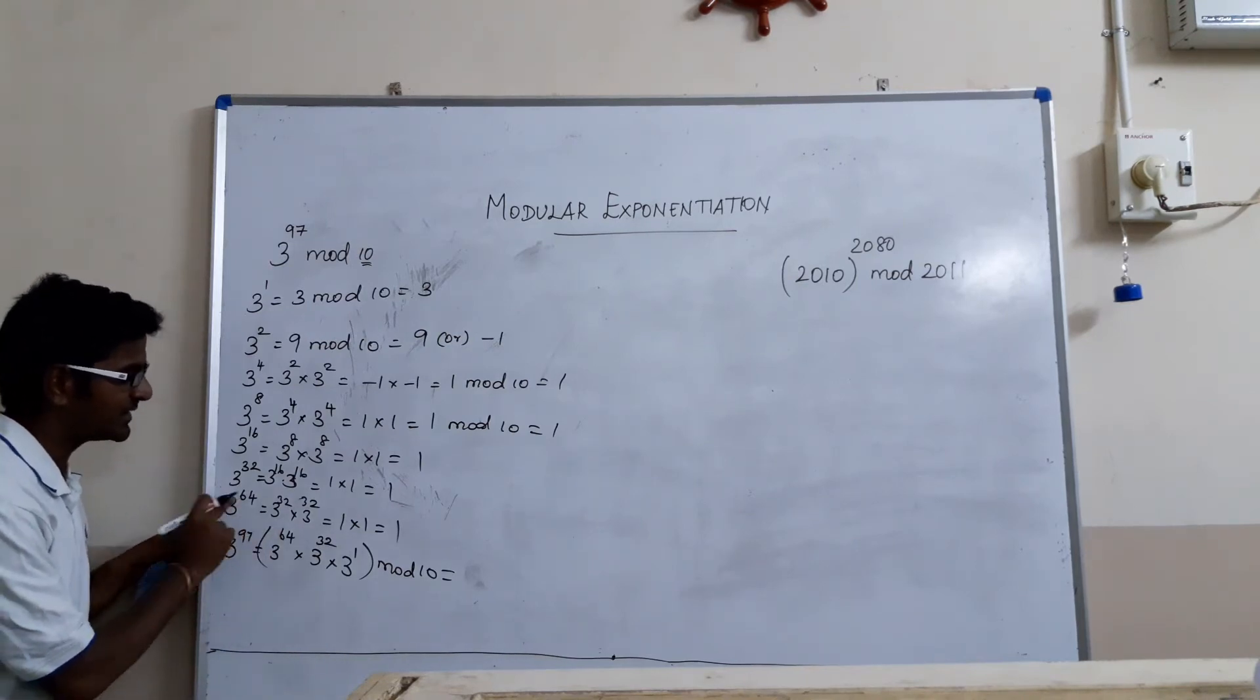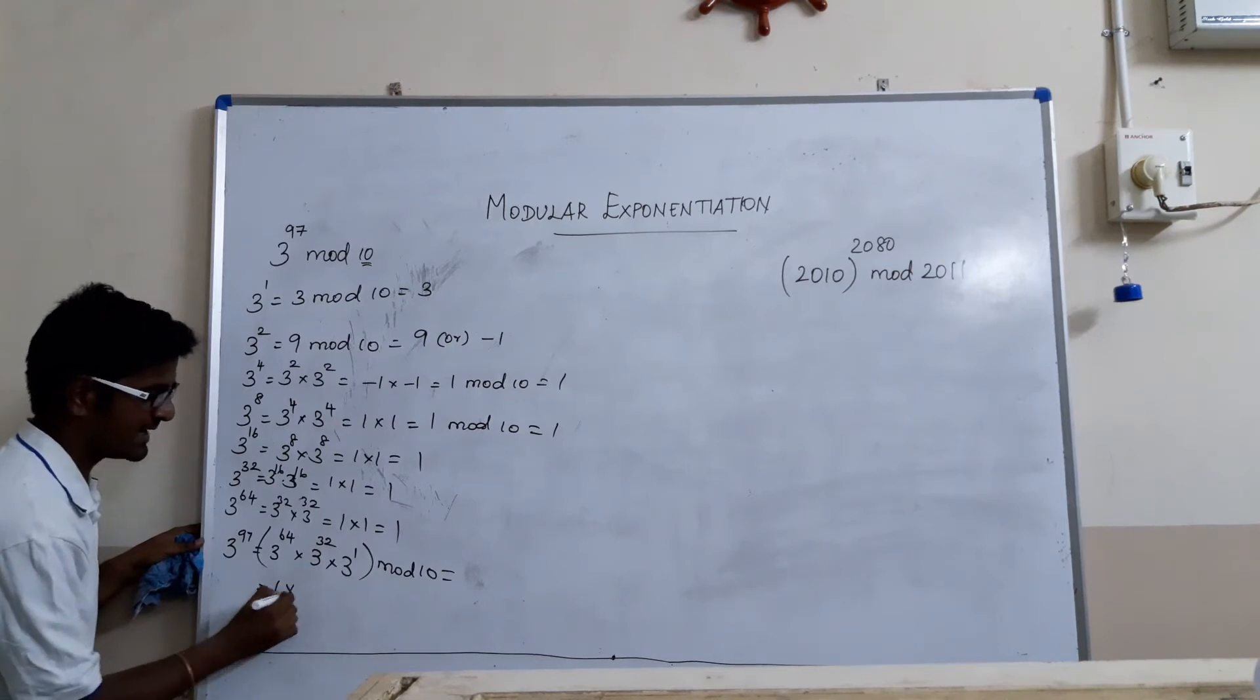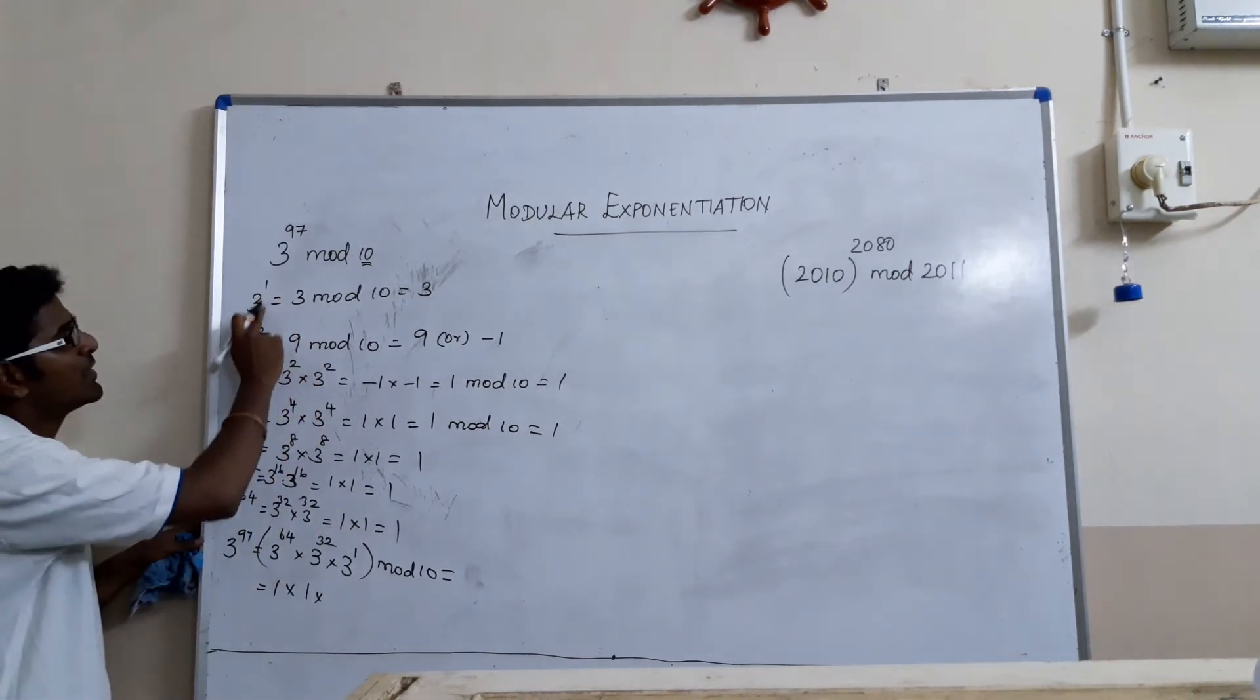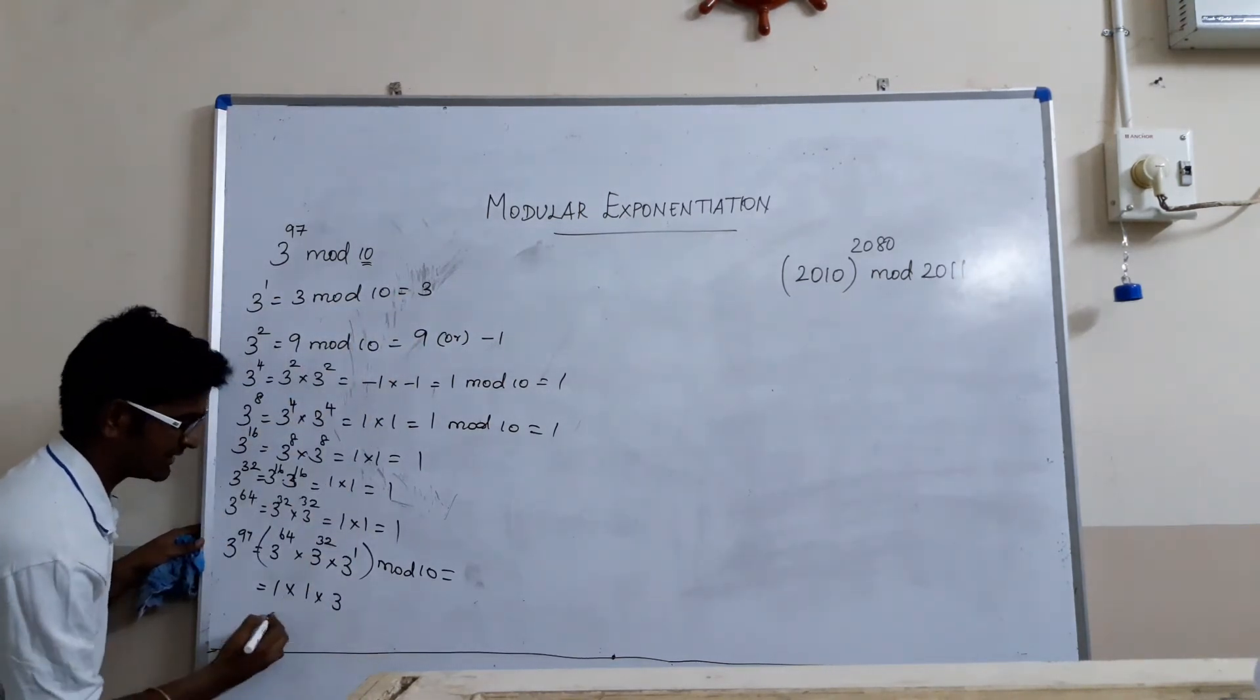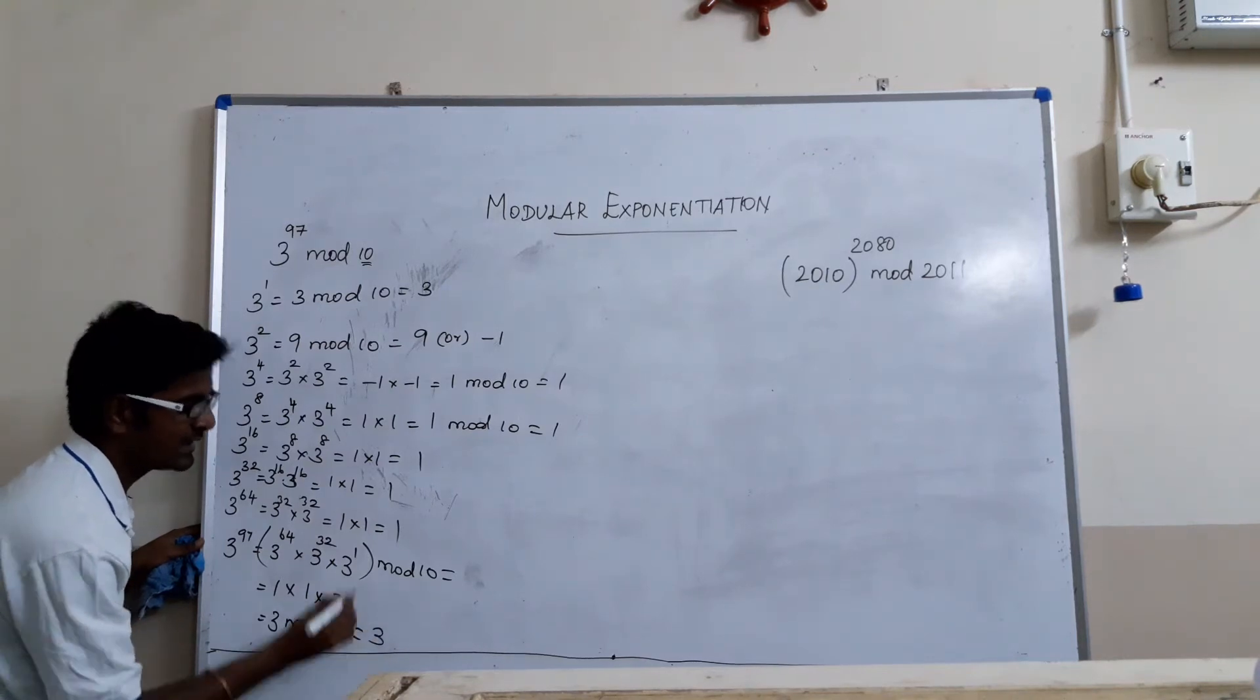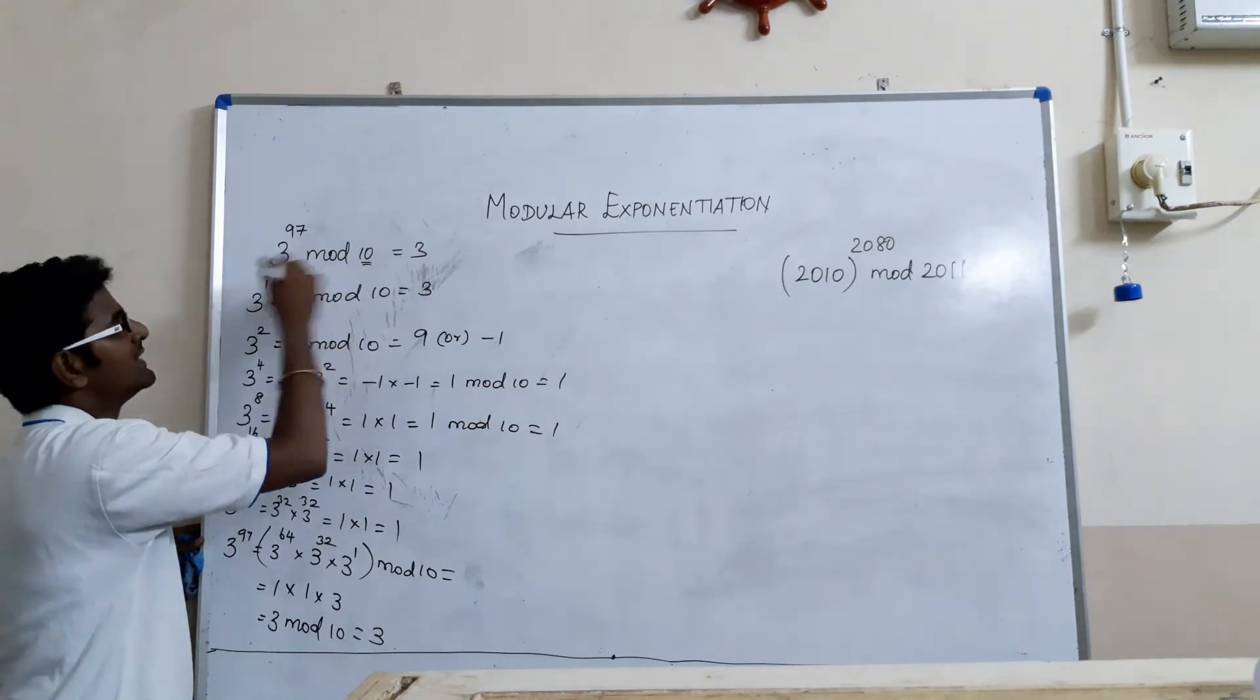And, 3 power 97 can be written as 3 power 64. What is 3 power 64? It is 1 which is equal to 1 into 3 power 32 is 1 into what is the answer? 3 power 1 is 3 which is equal to 1 into 1 into 3 which is equal to 3 mod 10 which is equal to 3. The answer for this question 3 power 97 mod 10 is 3.